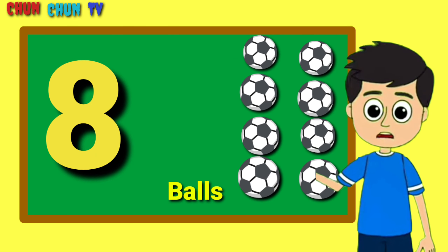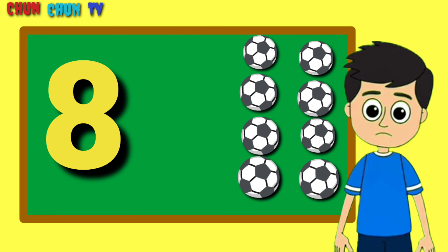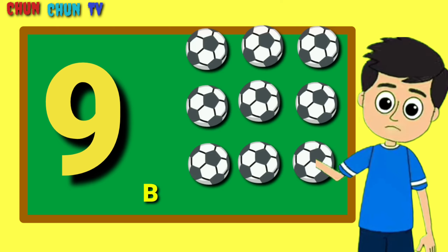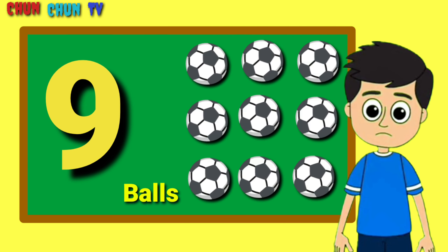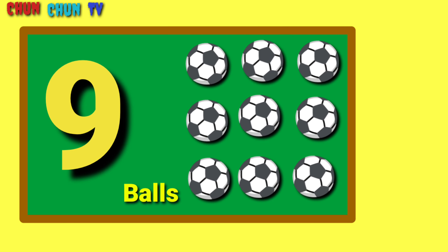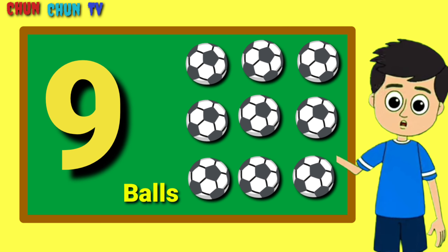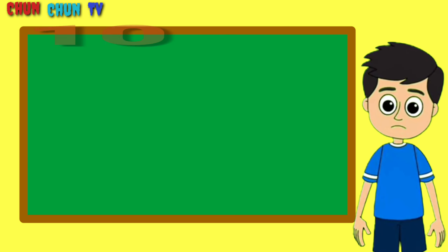One, two, three, four, five, six, seven, eight. Nine balls. One, two, three. Three threes are nine.